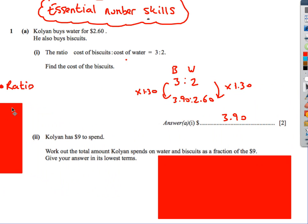Pretty straightforward ratio question. Write down your ratio. That's biscuits to water. We know that the water costs $2.60. How do we get from 2 to 2.60? Times by 1.3. Therefore, we times the other side by 1.3. Therefore, it's $3.90.